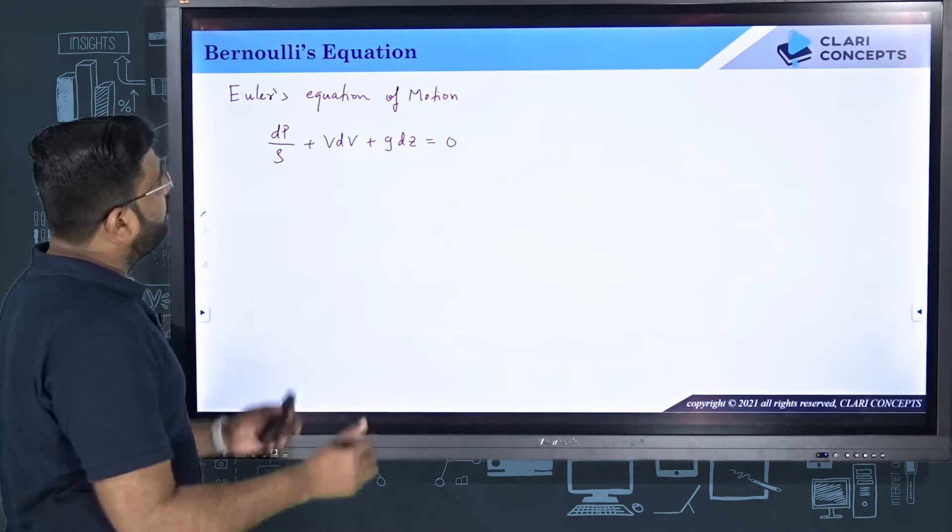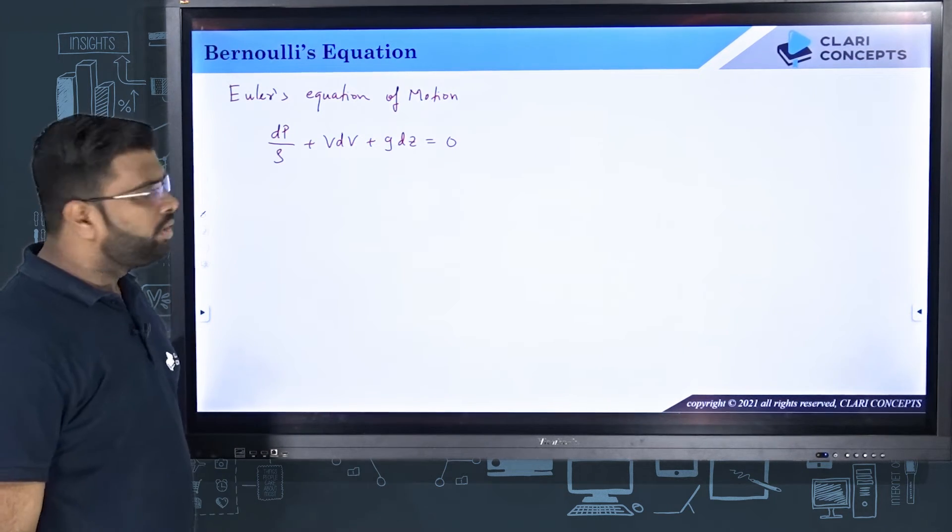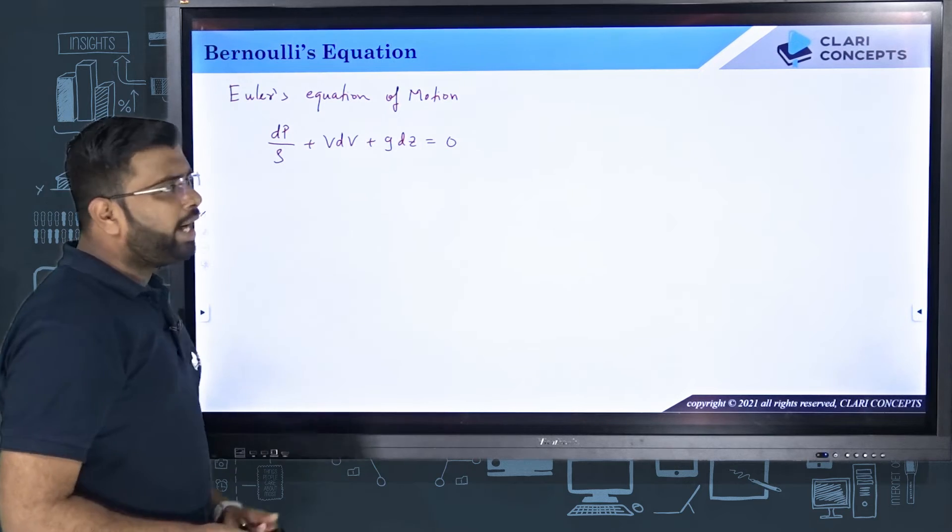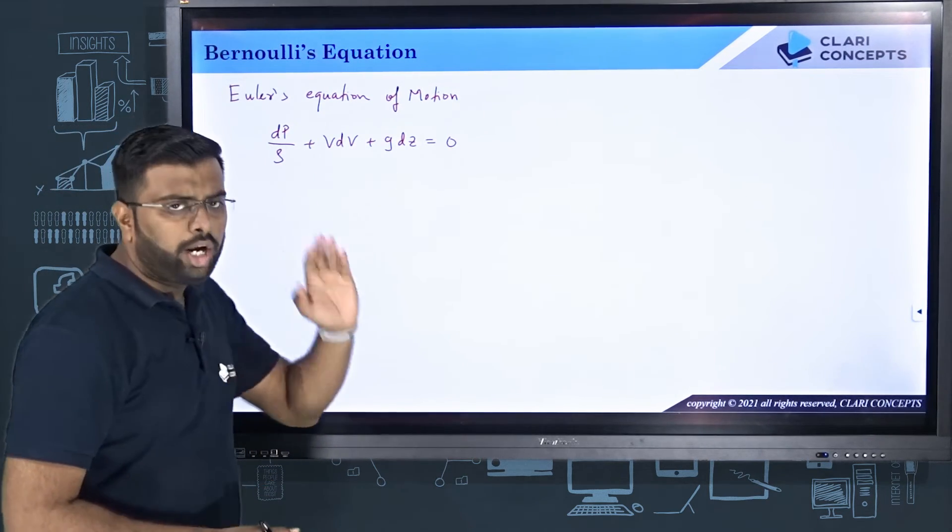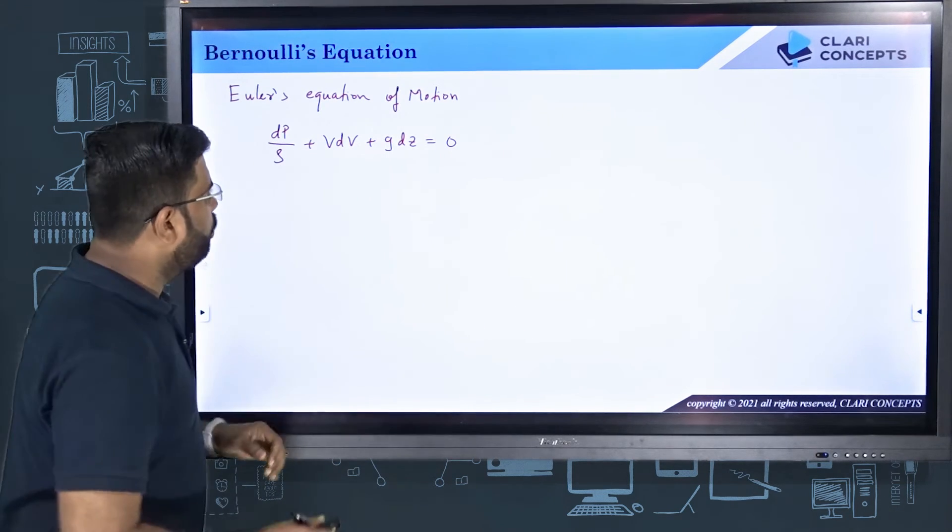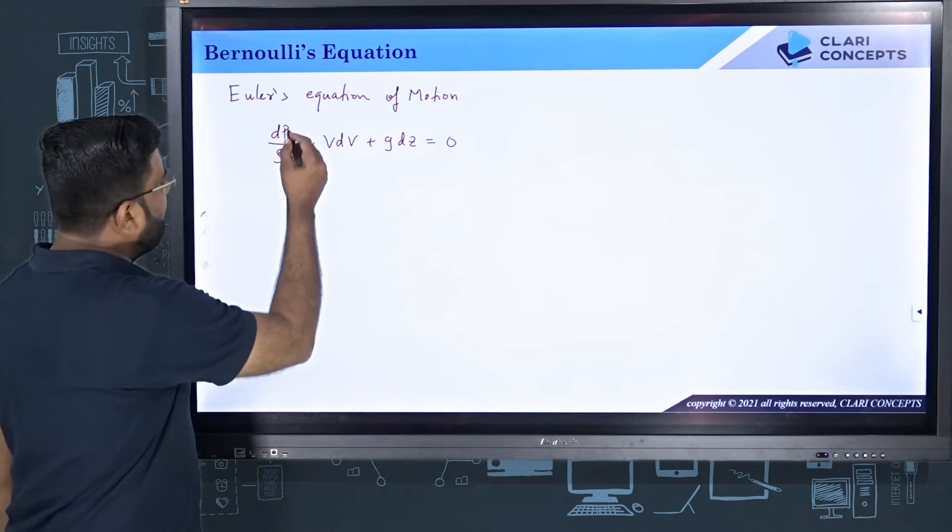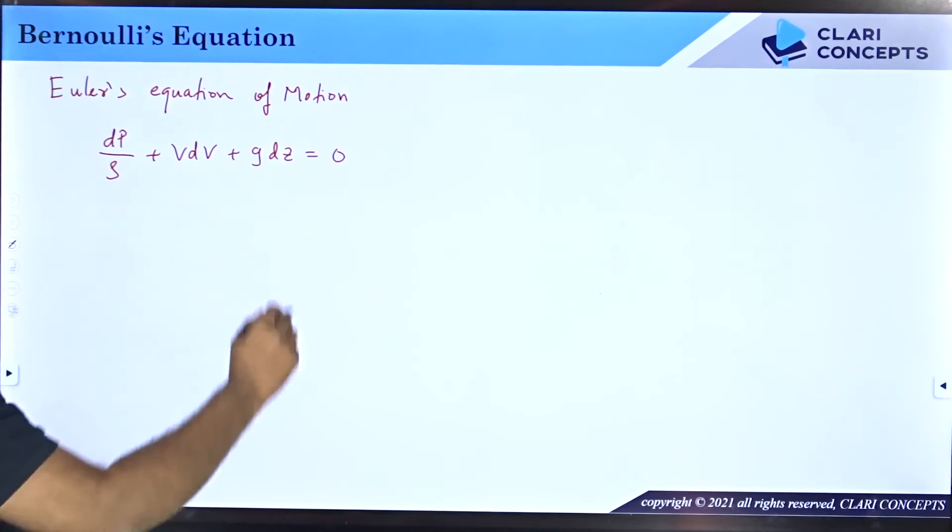Bernoulli's equation can be derived from the basis of Euler's equation of motion. If you do not know where this Euler's equation of motion came from, look at my previous lecture where I have derived this equation. So Euler's equation of motion says that dp/ρ + vdv + gdz = 0.